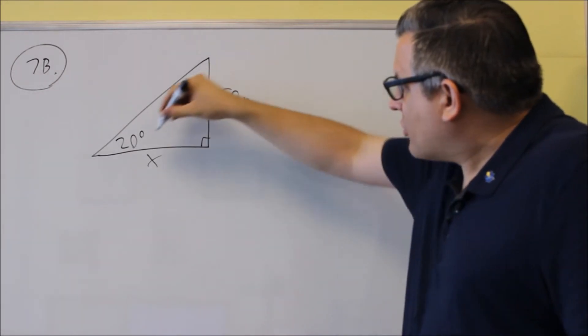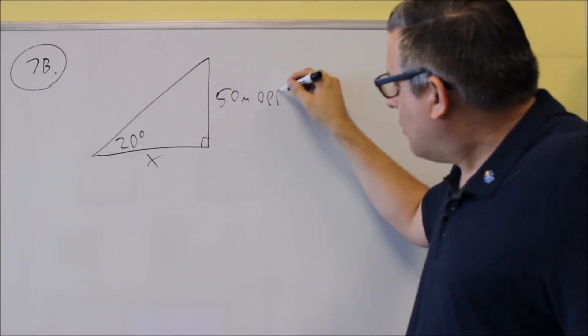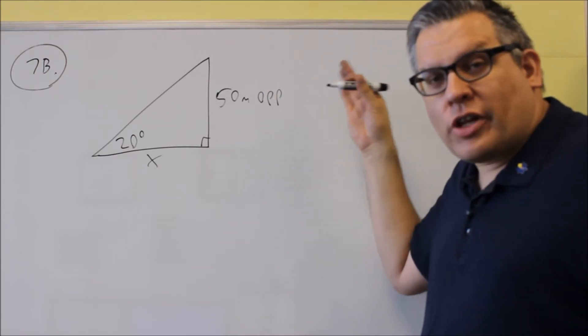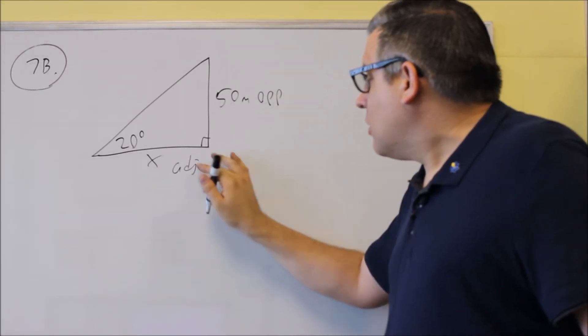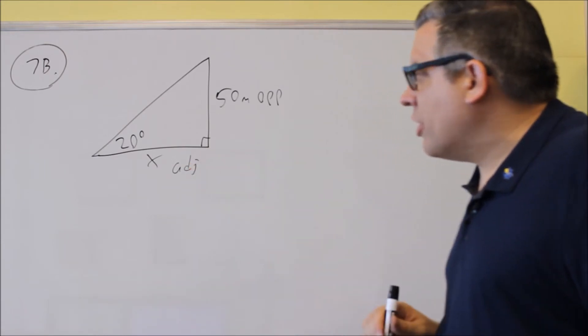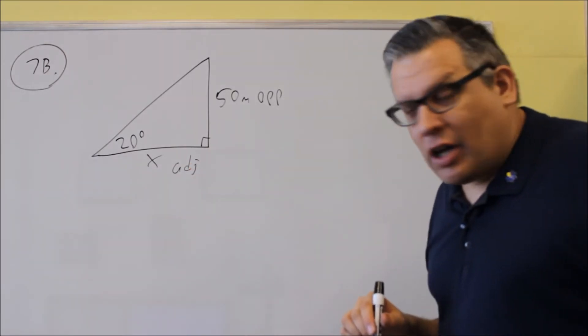We want to pick a trig function that relates. Now we have an opposite side. So a trig function that relates the opposite side and the adjacent side would be this one here. You're going to use tangent again for that one.